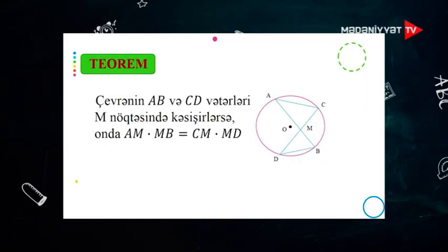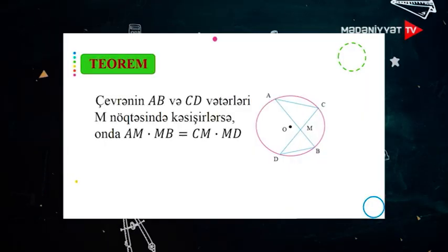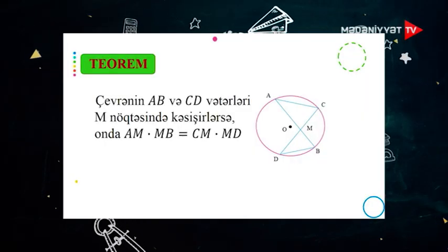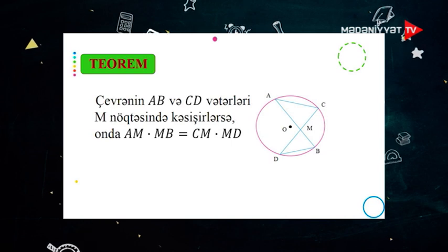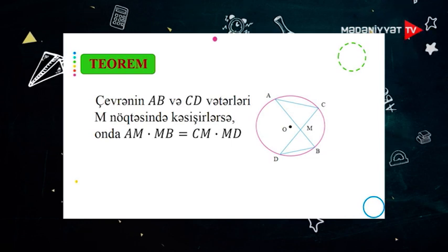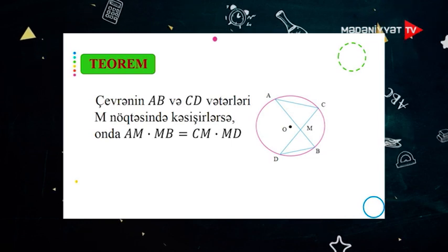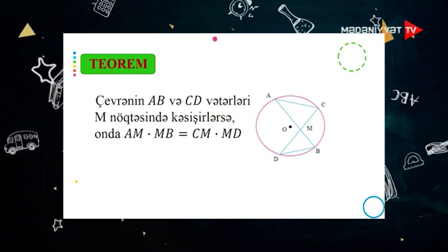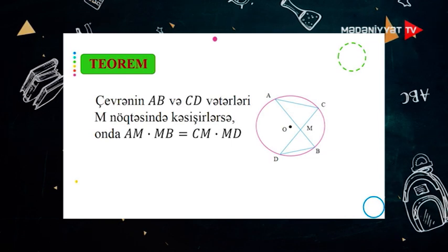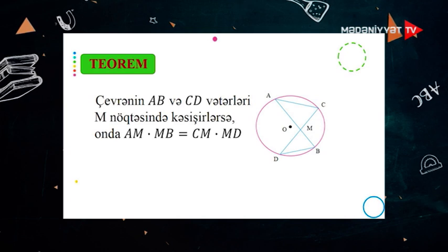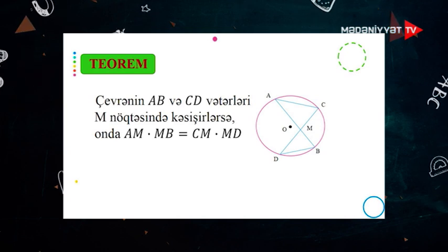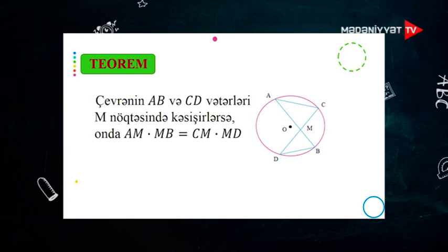İndi biz bir tərimdən başlayacaq. Çevrənin AB və SD vətərləri M nöqtəsində kəsəşirsə, bu zaman AM vurulsun MB bərabər olacaq SM vurulsun MD-yə.